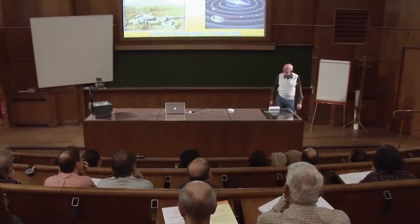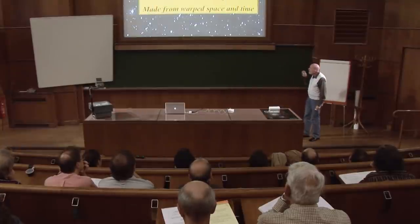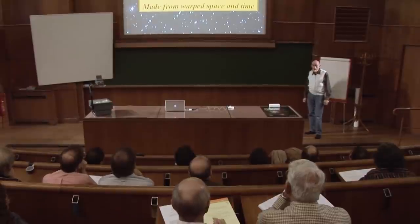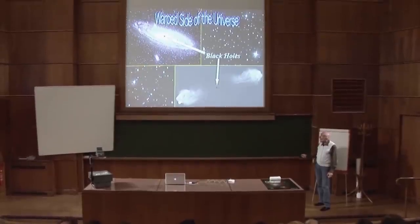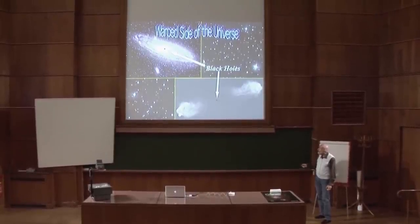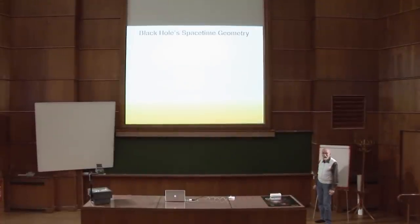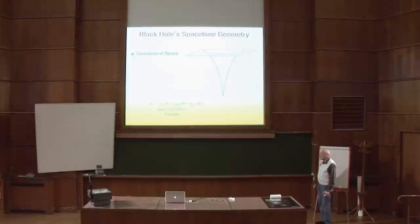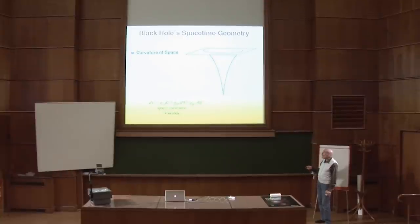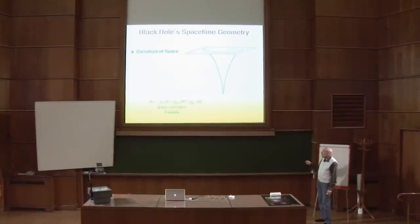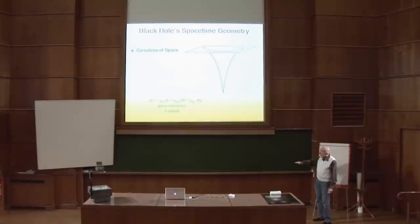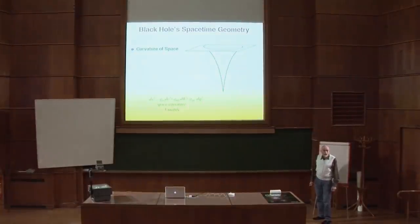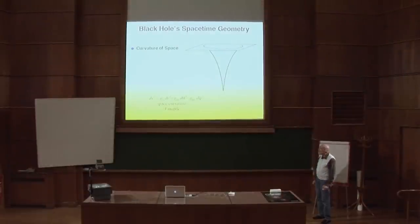I want to talk today about what I call the warped side of the universe, by which I mean phenomena and objects that are made largely or entirely from warped space and time. The best-known example is the black hole, described by a space-time metric with a spatial metric displayable as an embedding diagram showing the intrinsic geometry of an equatorial slice through the black hole, embedded in a flat higher-dimensional space.